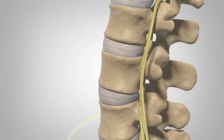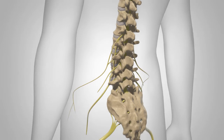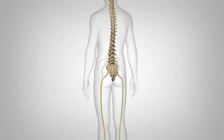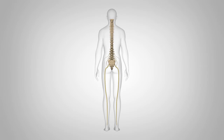At each level of the spine, spinal nerves exit on both the left and right sides. These branch out to enable movement and feeling throughout the body. Cervical nerves allow for motion and sensation in portions of the upper body, including the head, neck, shoulders, chest, arms, and hands.